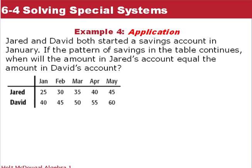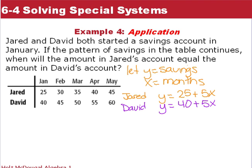Here's an example. Jared and David both started a savings account in January. The pattern of savings in the table continues. When will the amount in Jared's account equal the amount in David's account? For our story problem, we have to first define our variables. We'll let y equal the total savings and x equal the number of months. Starting with Jared, he starts with $25, so that's his y-intercept, and he's going up $5 per month. David starts with $40 and he's still saving $5 a month. Look at these two equations. They have different y-intercepts, 25 and 40, but the slopes are the same. Therefore these lines are parallel lines and they will never intersect. They will never be equal to each other. Jared and David's accounts will never intersect.